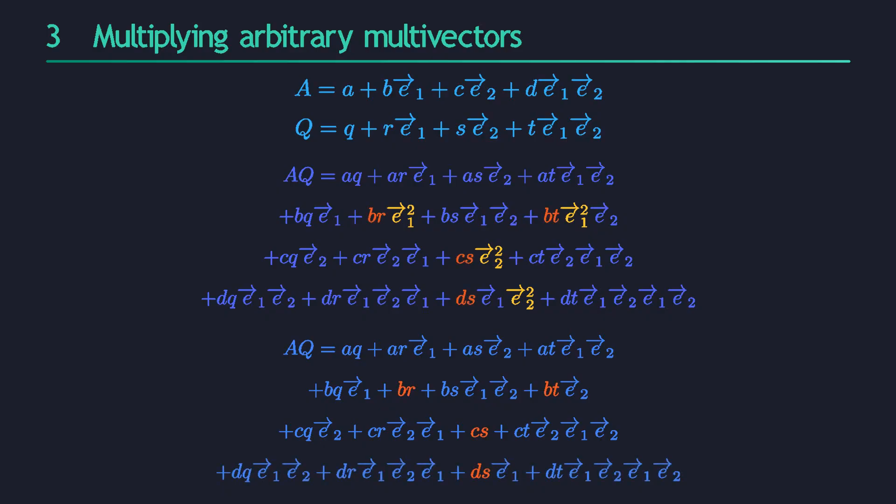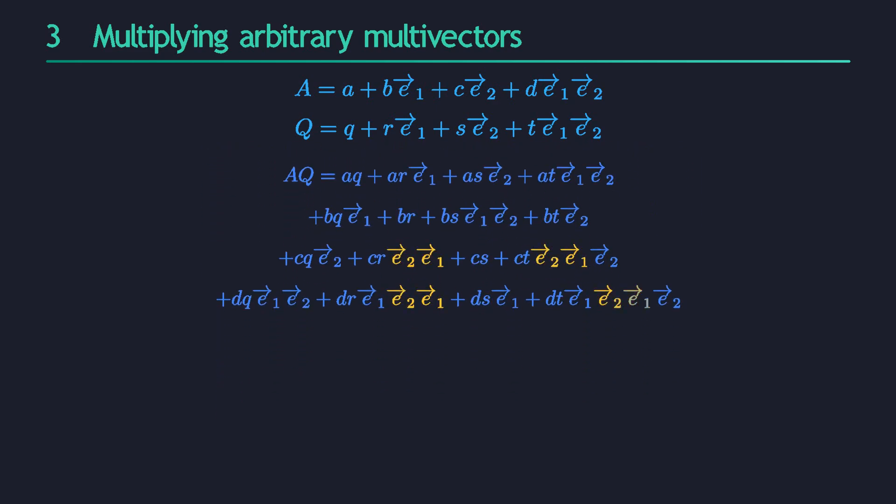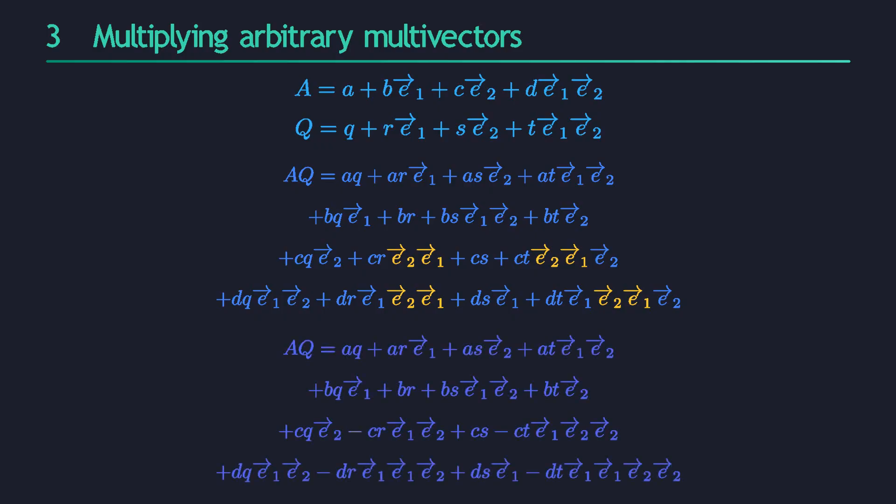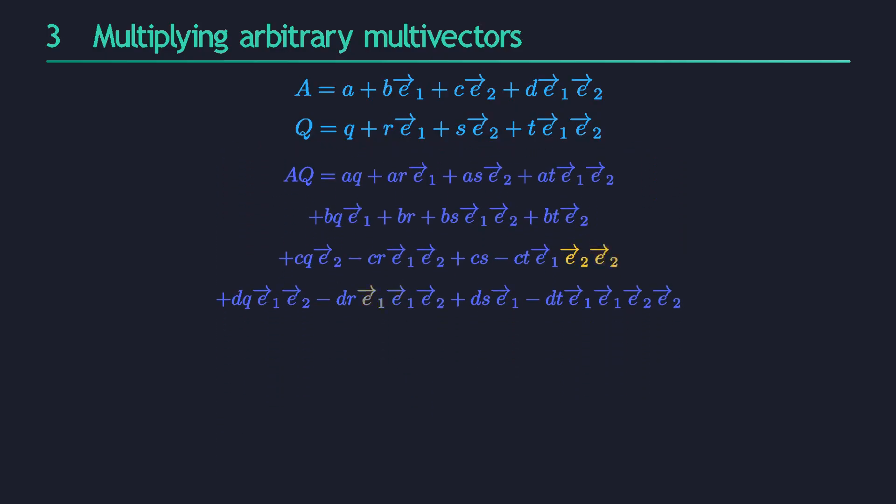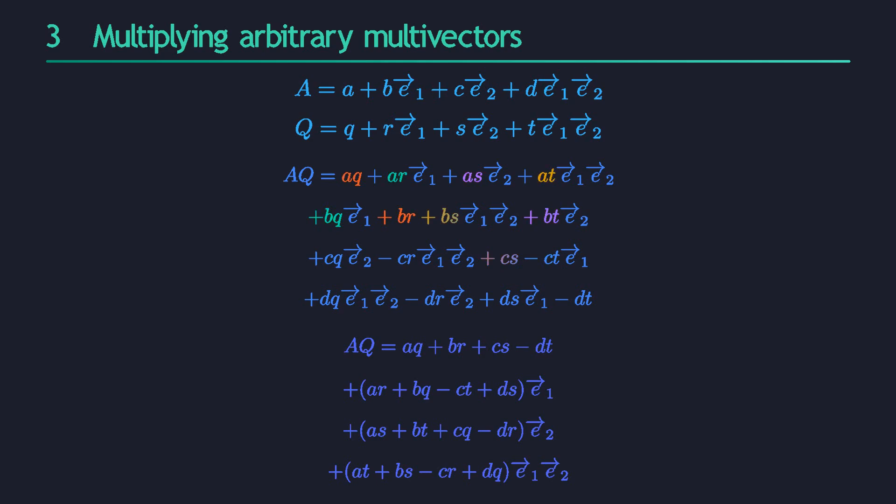Next, remember that the geometric product between orthogonal vectors is anti-symmetric. Our two basis vectors e1 and e2 are orthogonal. So you can swap the order of two different basis vectors, provided that you flip the sign. We do that everywhere, and this creates some new opportunities to turn the square of a basis vector into the number 1. Finally, we group like terms together, and we get a new multivector with four components.